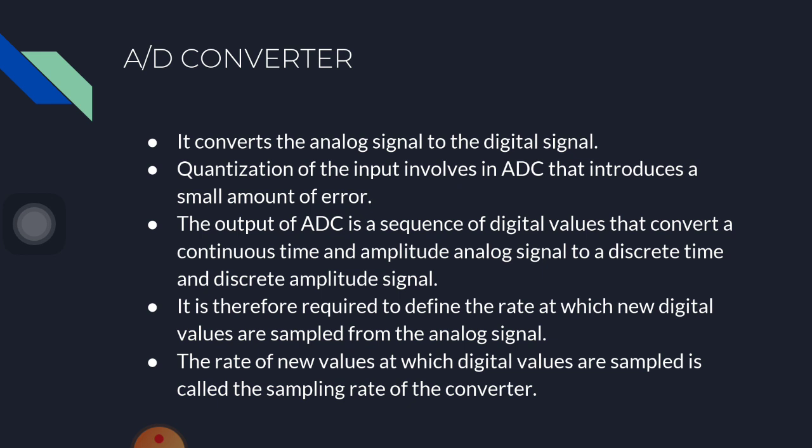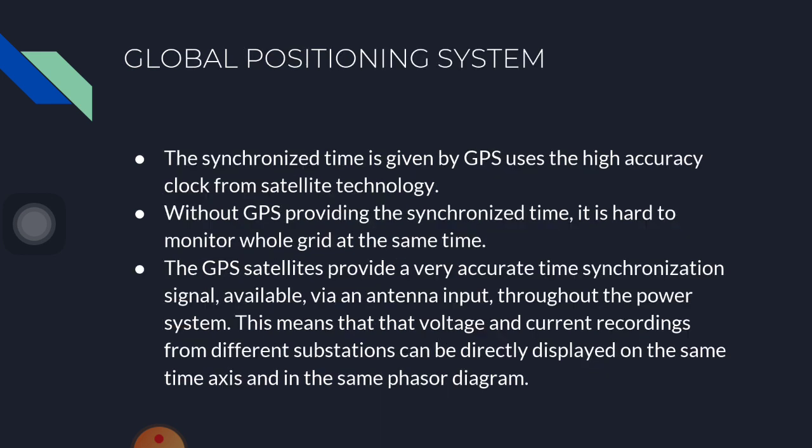AD converter: it converts the analog signal to a digital signal. Quantization of the input involves the ADC, which introduces a small amount of error. The output of the ADC is a sequence of digital values that converts a continuous-time and amplitude analog signal to a discrete-time and discrete-amplitude signal. The rate at which new digital values are sampled is called the sampling rate of the converter.